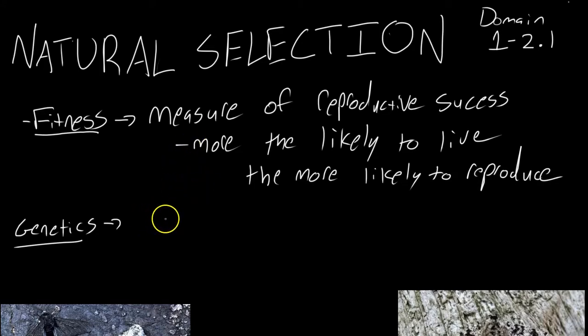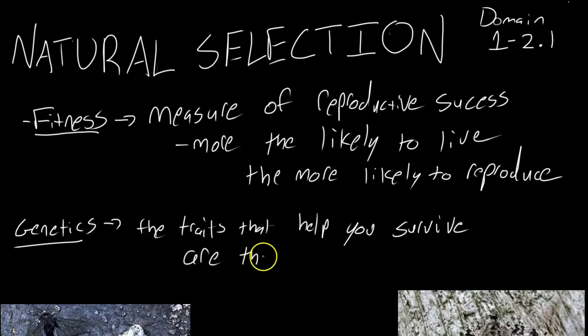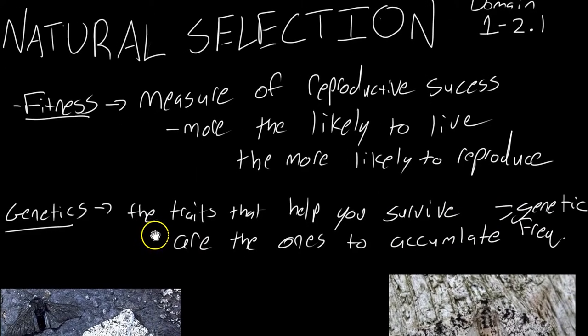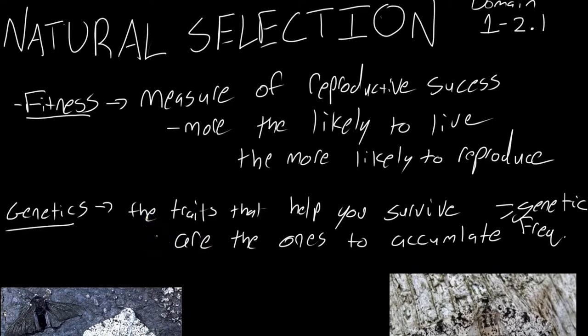Now genetics explains this as the traits that help you survive are the ones that are going to accumulate. Now these traits that we're going to talk about, as they accumulate within the population, that allows the organism to further survive, but also those traits, because they help that organism survive, they're going to become more and more popular in the sense of more and more individuals are going to display that trait. So it's going to change the overall genetic frequency.